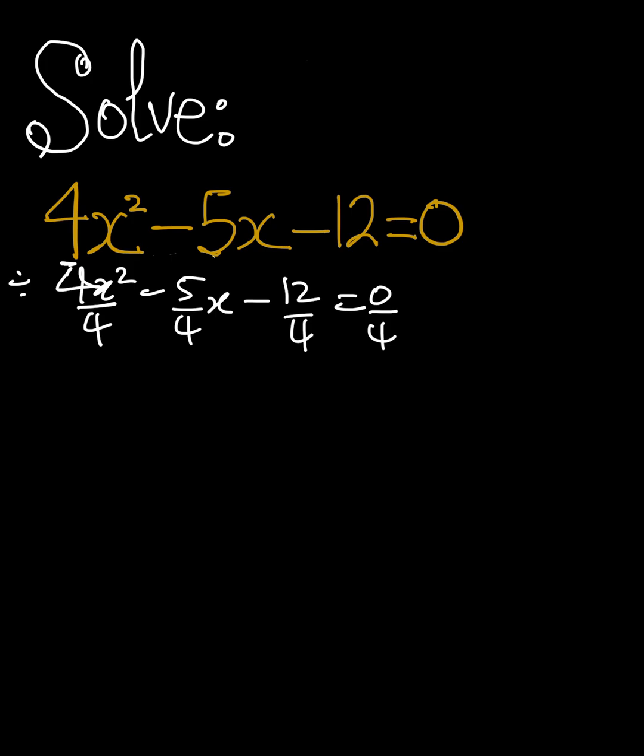...we end up getting x squared minus 5 over 4x minus 3 is equal to 0. x squared minus 5 over 4x is equal to 0 plus 3.